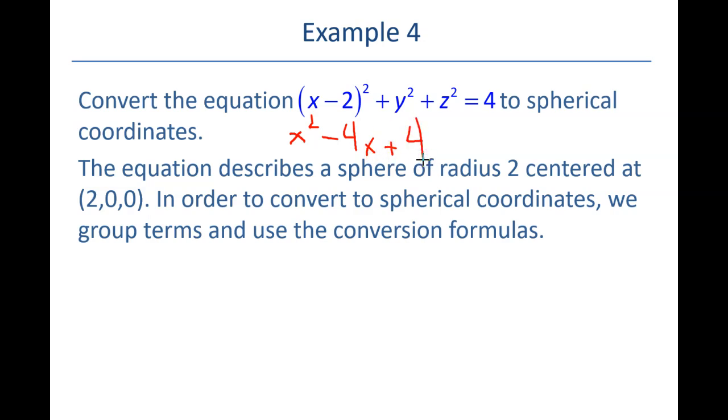Alright, and notice because there's this 4 here and a 4 over here on this side, I could cancel those out, and they would become 0 on the right-hand side. I'd have an x², a y², a z², and a minus 4x equal to 0.